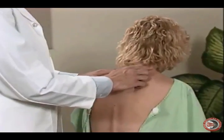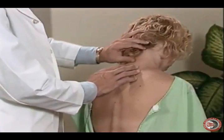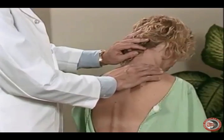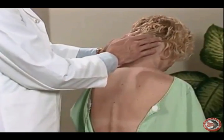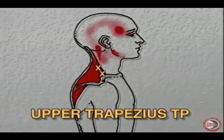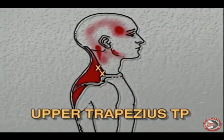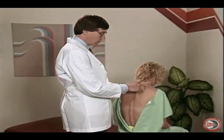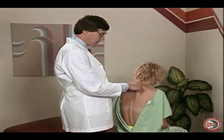Because myofascial pain syndrome is such a common condition that presents in your office, let's talk about some of these muscles that become myofibrotic. A very common muscle in myofascial pain syndromes is the upper trapezius. When it develops a trigger point, it refers pain into the lateral shoulder, posterior lateral neck, behind the ear, and the temporal region. The trapezius muscle may cause muscle tension headaches and temporal headaches. A patient presenting with headaches in the occipital or temporal region should be evaluated for a trigger point in the upper trapezius muscle.